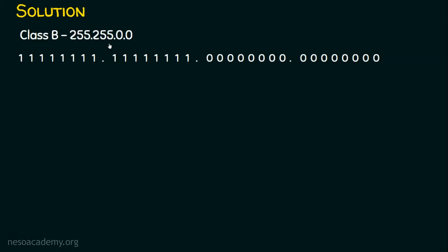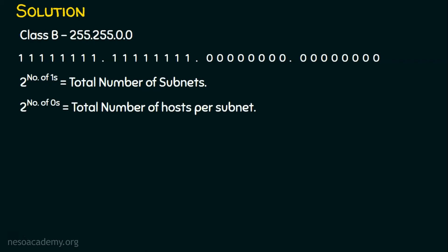Let's recollect the formula: 2 to the power n. Specifically, 2 to the power of the number of ones gives the total number of subnets we can get, and 2 to the power of the number of zeros gives the total number of hosts per subnet. We've seen this in previous examples — the number of ones in the bits changed in the new subnet mask determines the number of subnets.